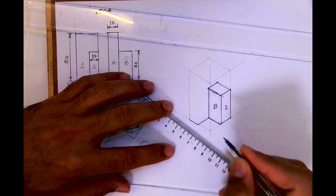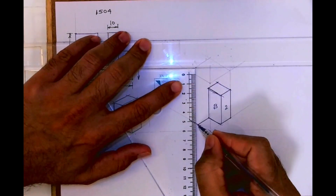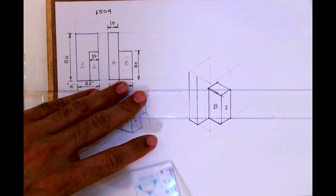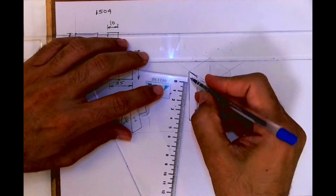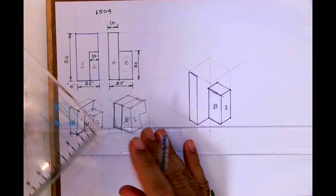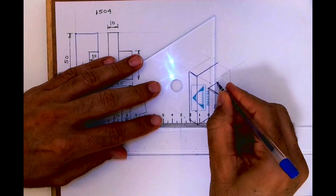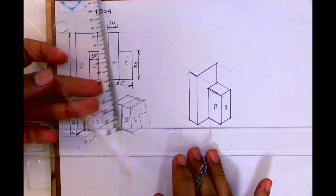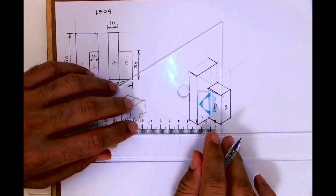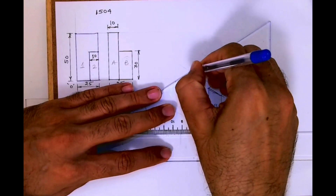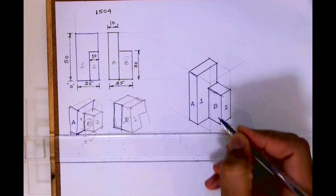So what I am doing — I am taking 10 mm over here, then I will go up. Here also I will go up by 50. Then I will join this line. Then I will go inside by 25, then I will go down. This is how it will come. I can draw the behind part which is down. So this is part A, and this is part one.